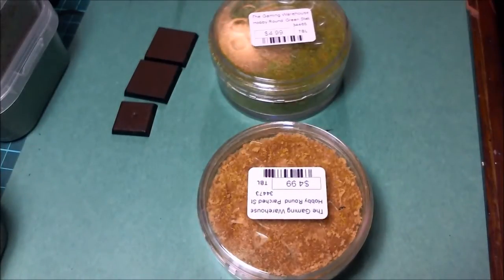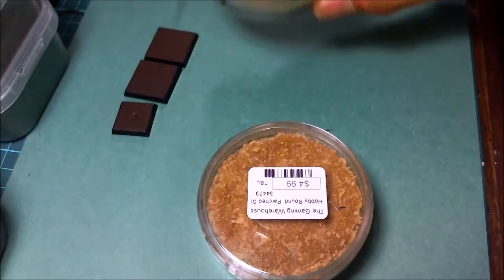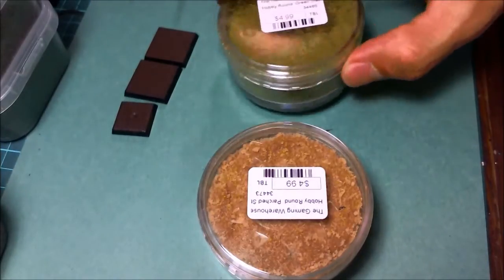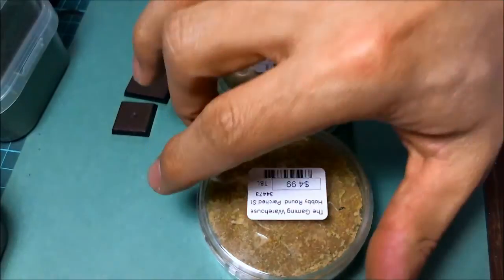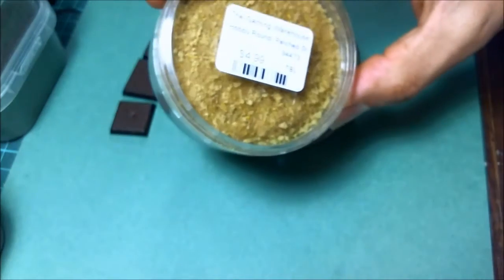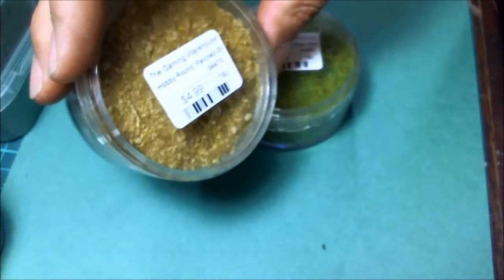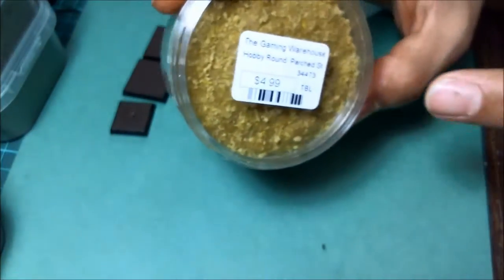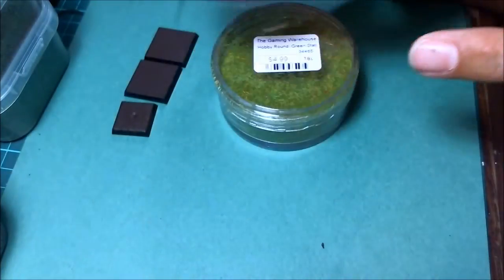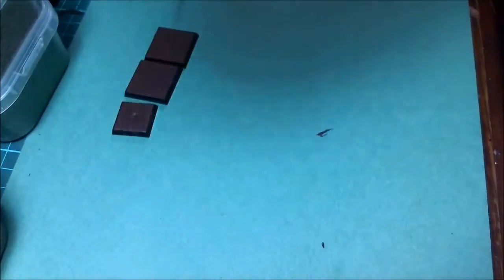As I kind of show here, it's pretty varied. It gives a really nice effect. I do like the tufts a heck of a lot. It doesn't go as far as this. With the Gale Force 9 or the normal static grass, it's all the same length. This gives you a more uniform look. This gives you a more varied look.